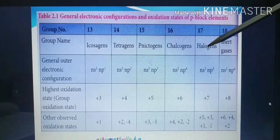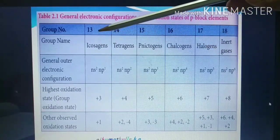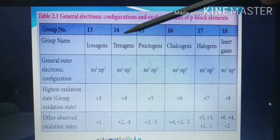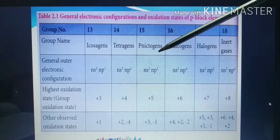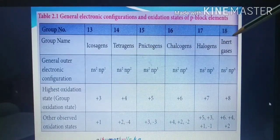Halogens means salt-producers. The group names are: boron group elements, carbon group elements called tetragen, nitrogen group elements called pnictogens, oxygen group elements called chalcogens, halogens, and inert gases.